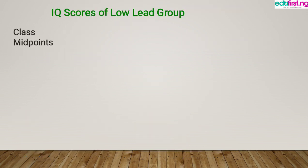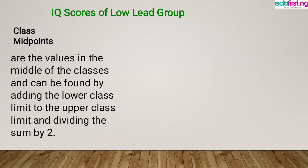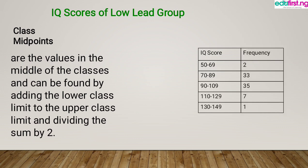We also have the class midpoint. The class midpoints are the values in the middle of the classes and can be found by adding the lower class limit to the upper class limit and dividing the sum by 2. For example, 50 plus 69 divided by 2 gives us 59.5. And 70 plus 89 divided by 2 gives us 89.5. That is why we call it the class midpoint.